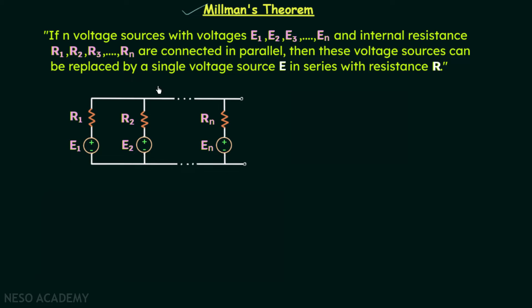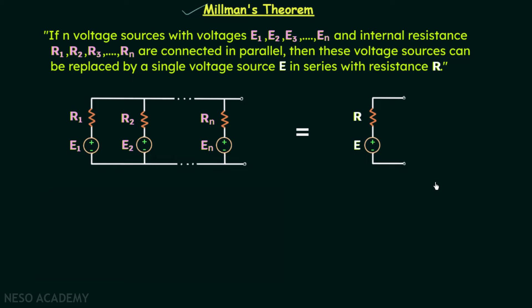We want to simplify this network using Millman's theorem. According to the statement, we can replace this arrangement with a voltage source E in series with resistance R. This simplified network is the Thevenin's equivalent network, so R is the Thevenin's equivalent resistance and E is the Thevenin's equivalent voltage Vth.